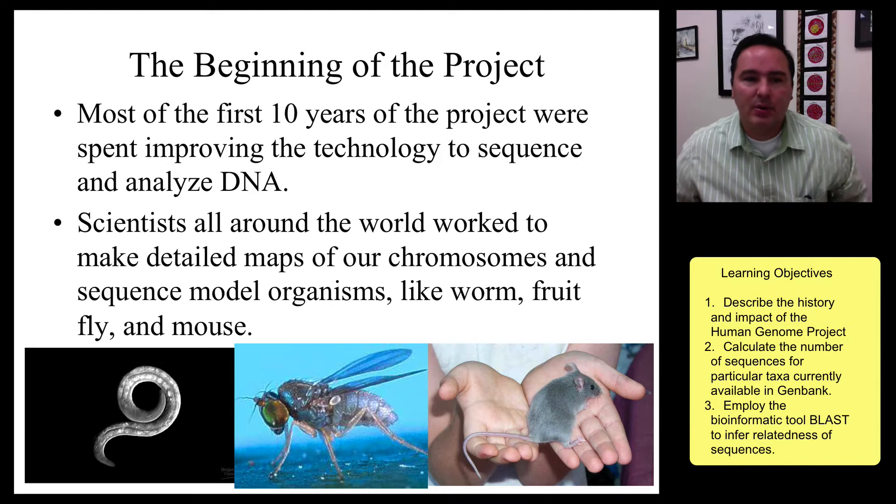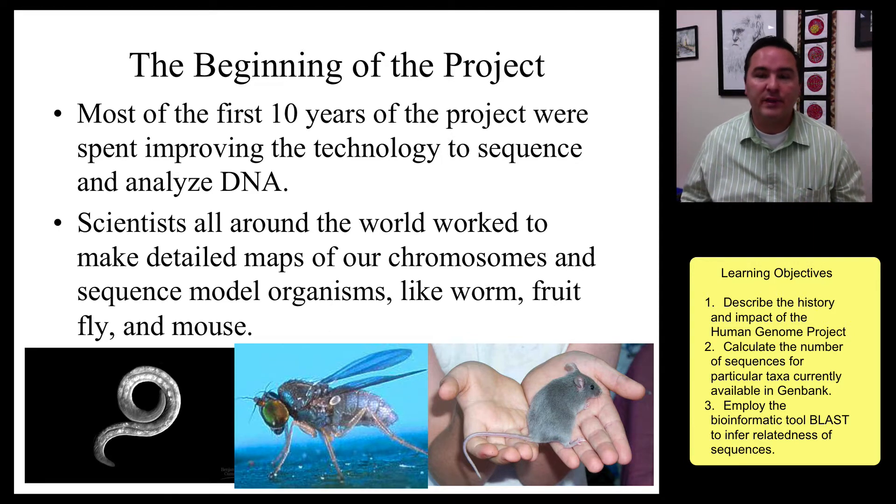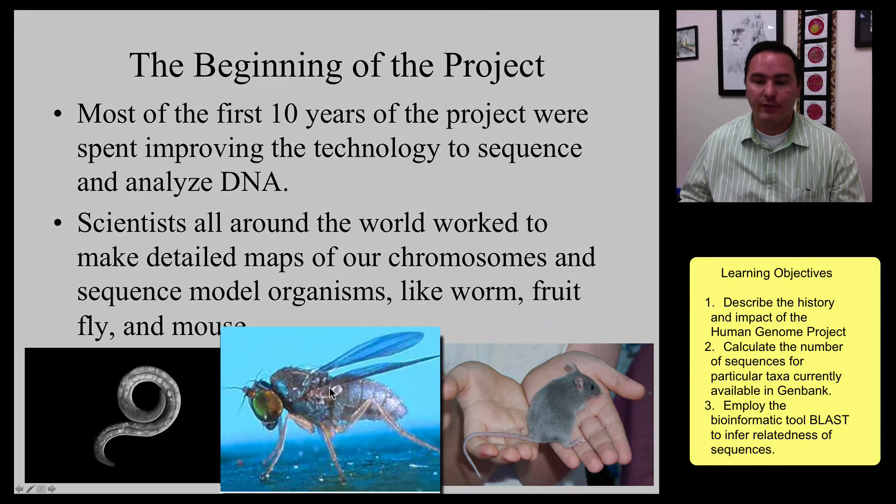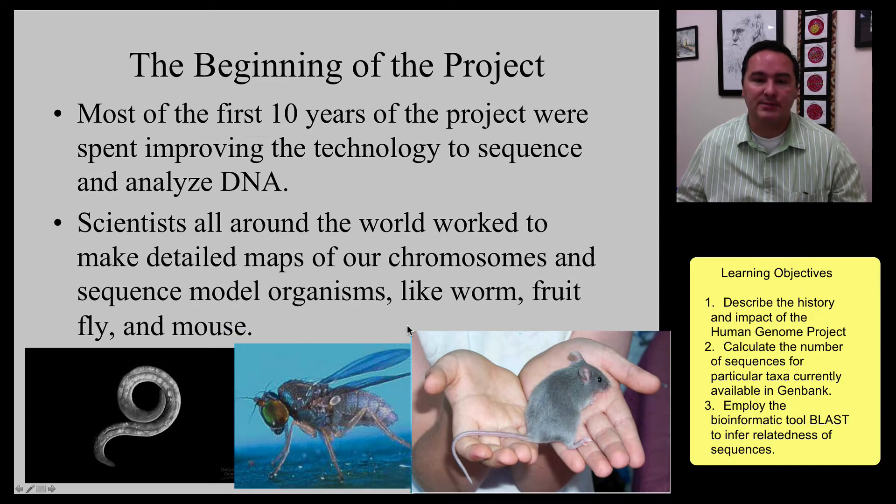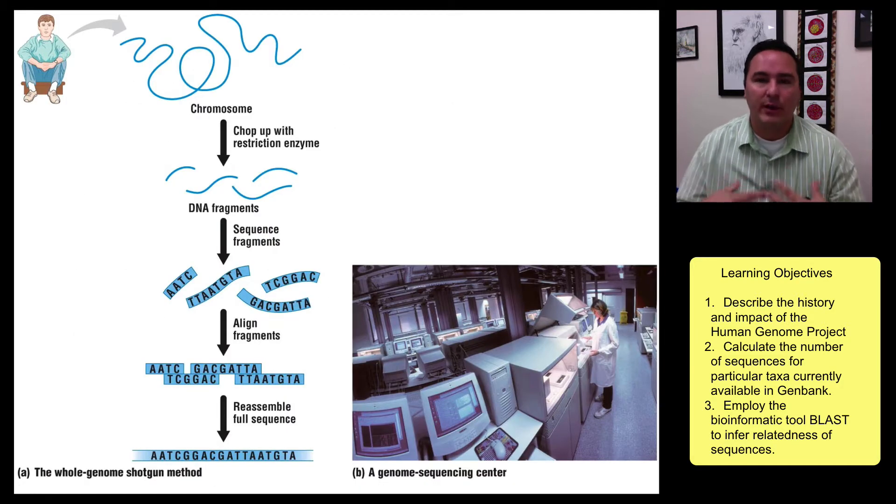So in the beginning of this project, most of the first years were used in improving the technology and trying to figure out how to sequence DNA in a more efficient manner. And so this was mostly done actually on other organisms like this worm, fruit flies, mice, and other organisms as well. But once all that was figured out, then we could really start to work on the Human Genome.